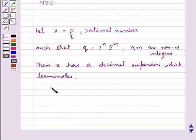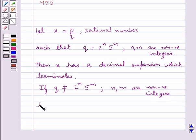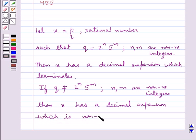But if the prime factorization of q is not of the form 2 raised to the power n into 5 raised to the power m, where n and m are non-negative integers, then x has a decimal expansion which is non-terminating repeating.